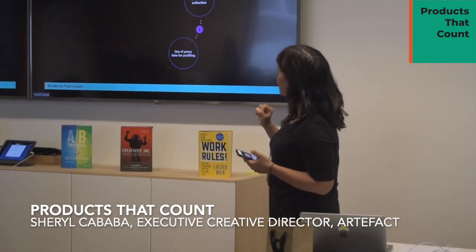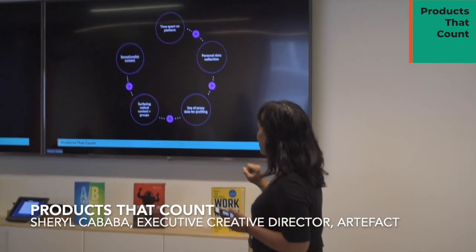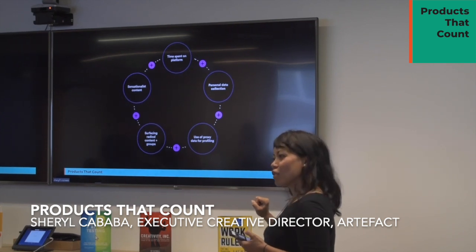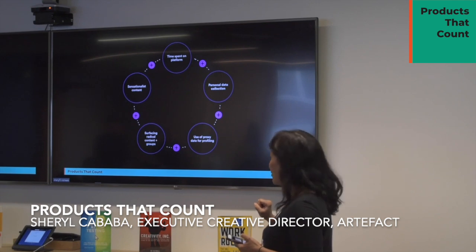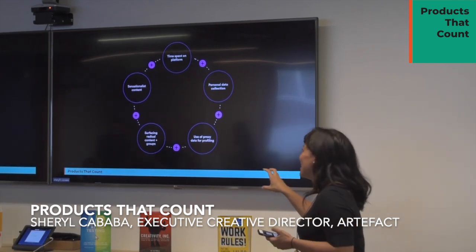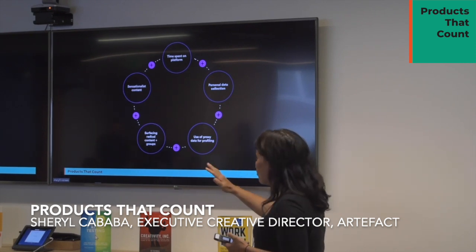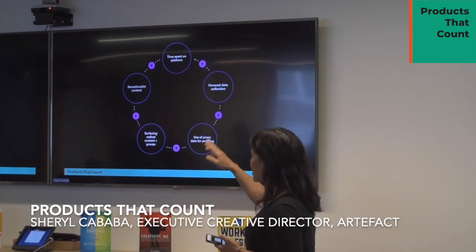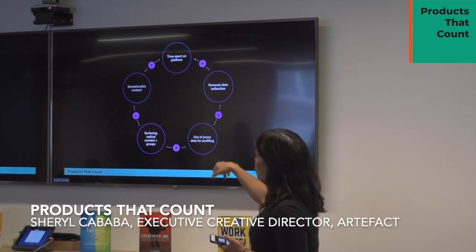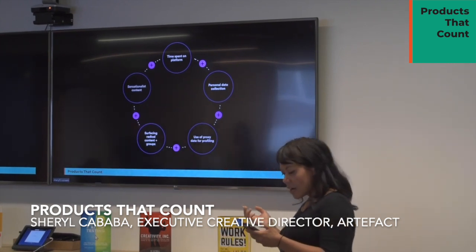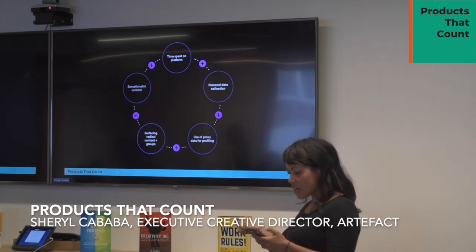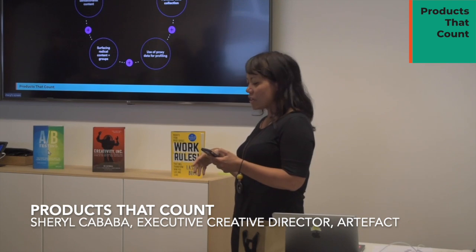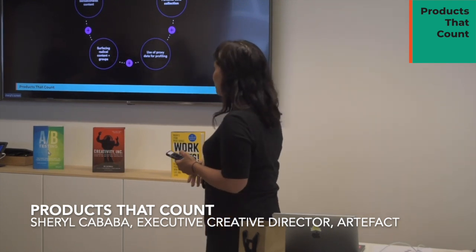At the community level, we have another causal loop: time spent on the platform leads to increased personal data collection, which leads to increased use of proxy data for profiling — for example, if you live in a certain zip code and drive a Volvo, the platform infers your political leanings. That's used to surface more radical content because it has a better picture of the extreme things that will appeal to you, leading to production and consumption of more sensationalist content, which leads to more time on the platform.